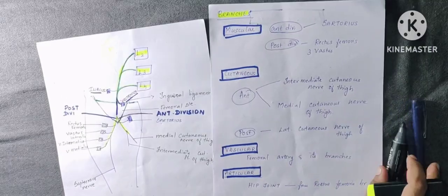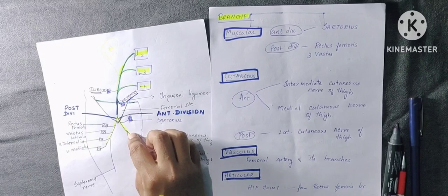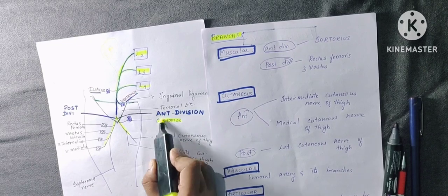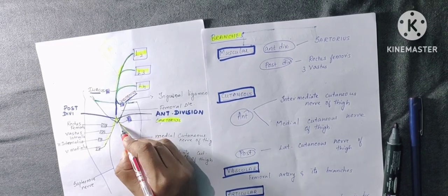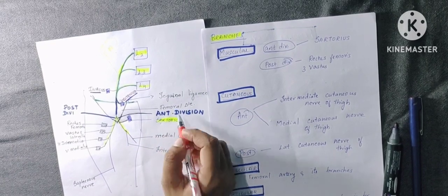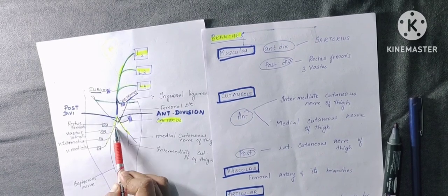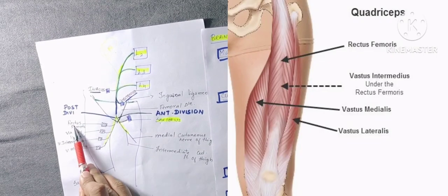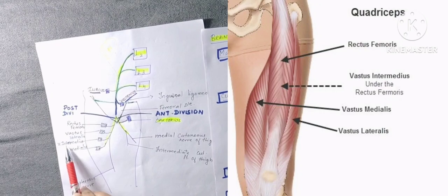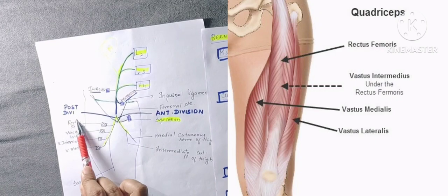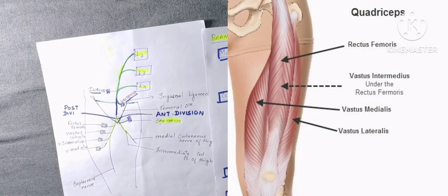Looking at the muscular branches: from the anterior division, the muscle supplied is the sartorius muscle. From the posterior division, the four muscles of the anterior compartment of the thigh are supplied — that is the quadriceps group. That is all about the muscular branches.